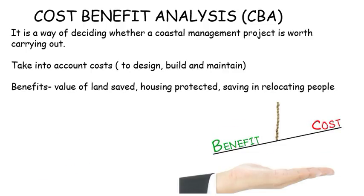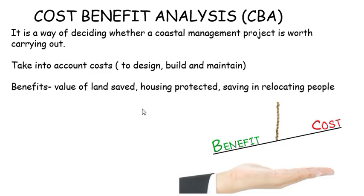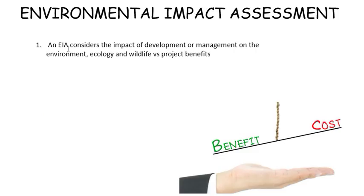The second tool is to consider the environmental impact of any management. An EIA, or environmental impact assessment, considers the impact of the development or management on the environment, the ecology, and the wildlife, versus the project's benefits — maybe economically and socially. It's no good thinking of a management strategy that has lots of economic benefits but is a complete disaster for the environment and wildlife. So we've got to weigh up a couple of different factors.